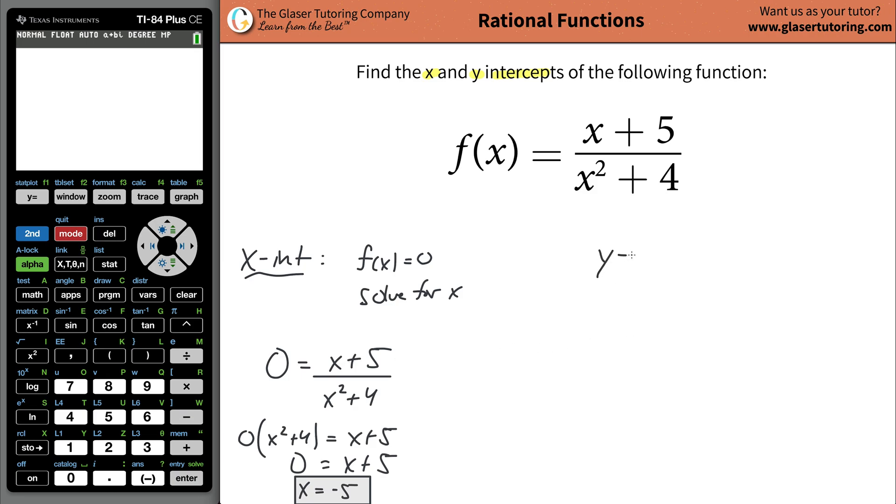Now for the y intercept, what are we going to do? So the y intercept is going to be the opposite. We're going to set x now equal to 0 in the function, and then we're going to solve for the f of x.